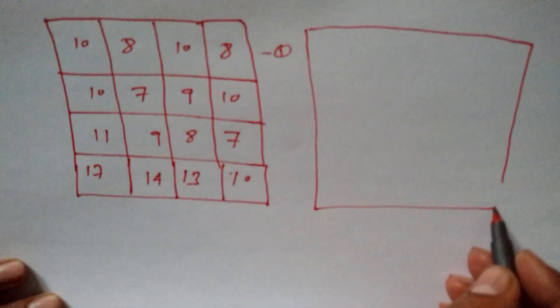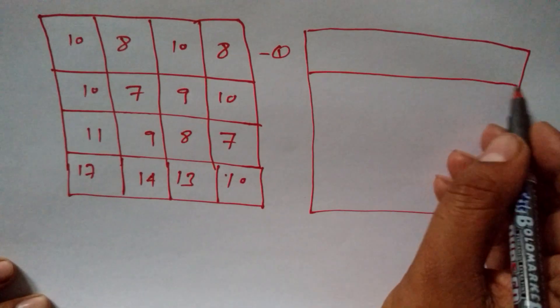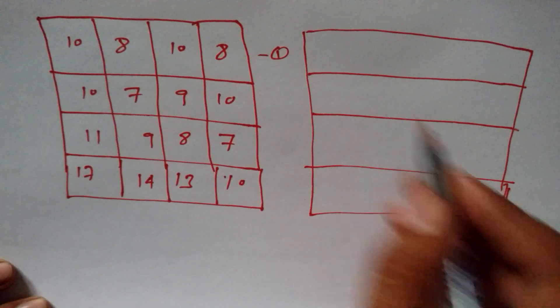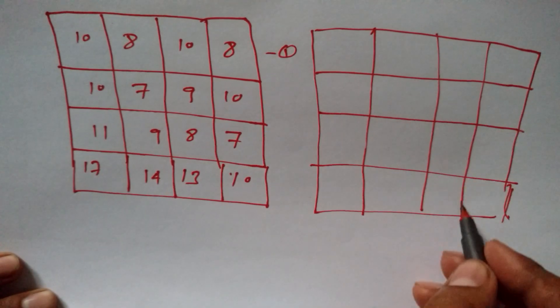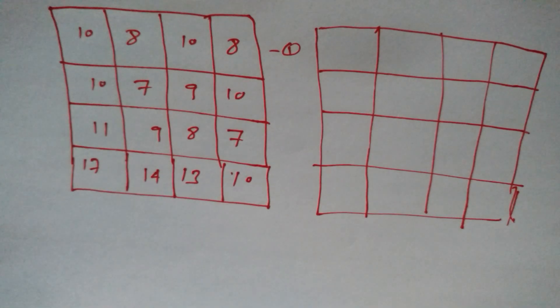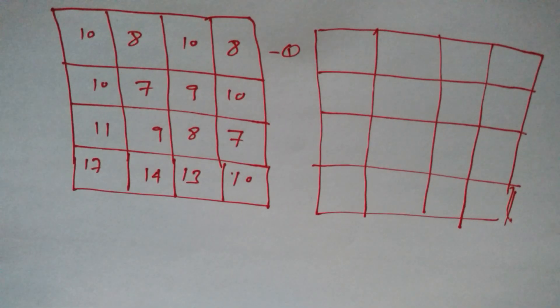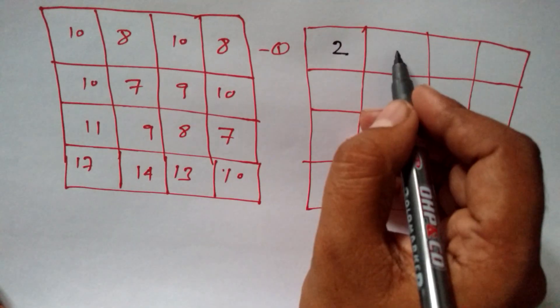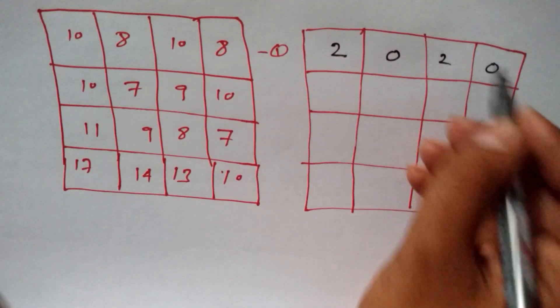Alright, so this is the table. 1, 2, 3, 4. 1, 2, 3, 4. I hope you can see easily. This is a quick video because I'm a little bit in a hurry. So, 2 and then 0, then 2 and then 0.